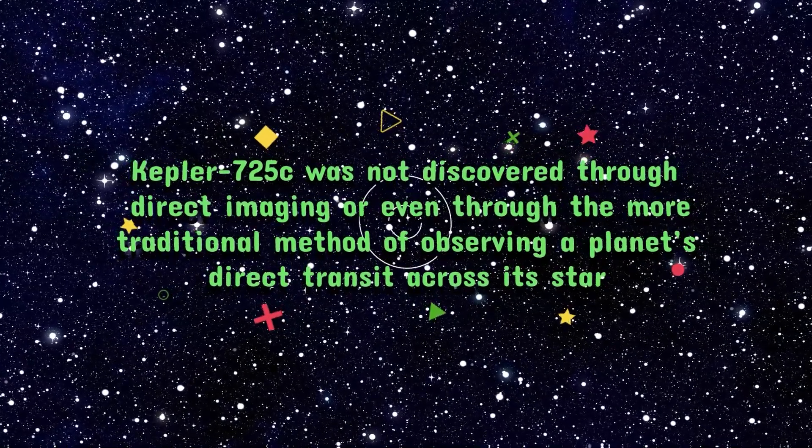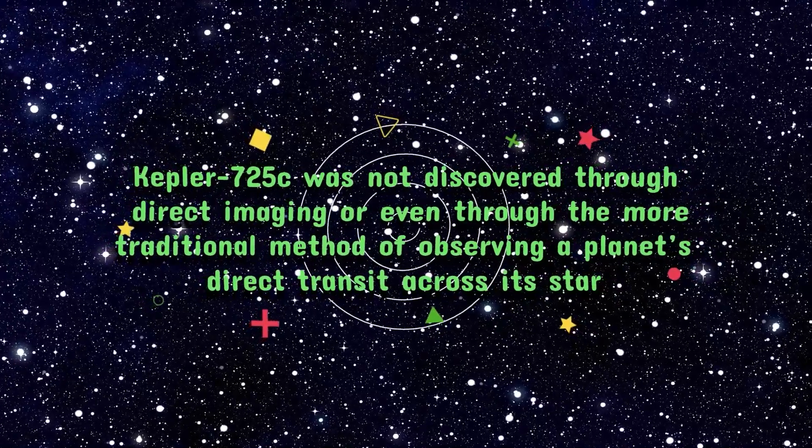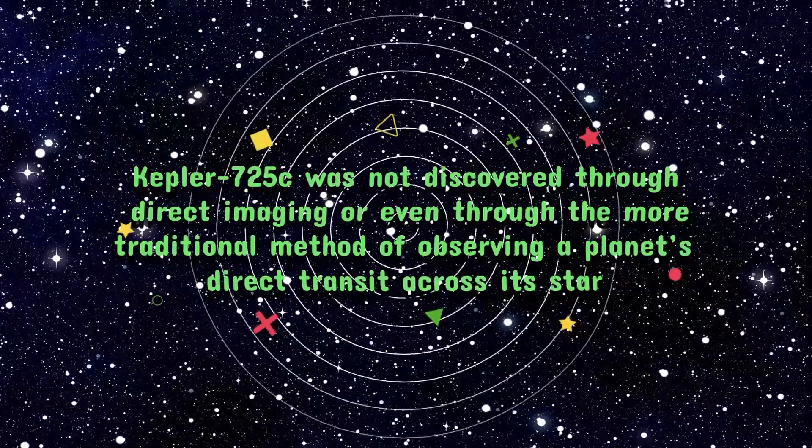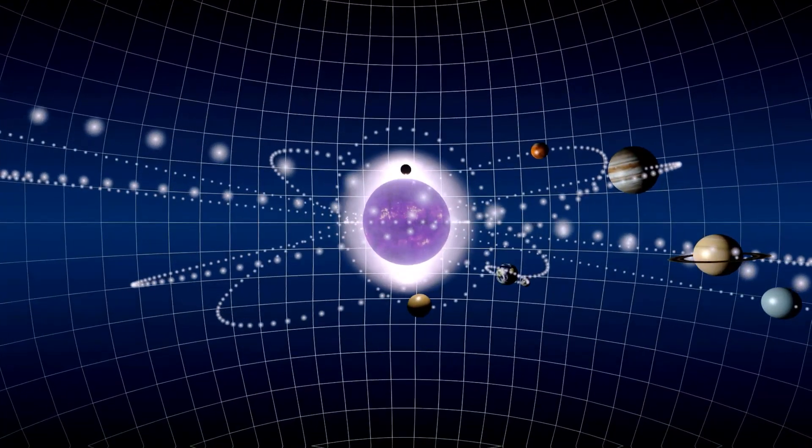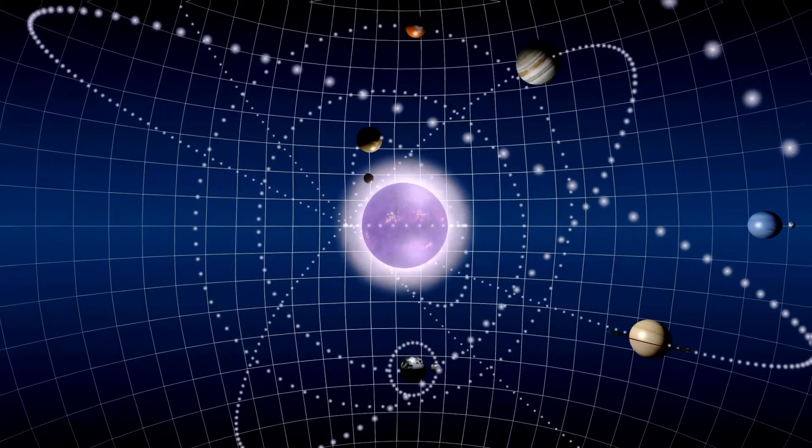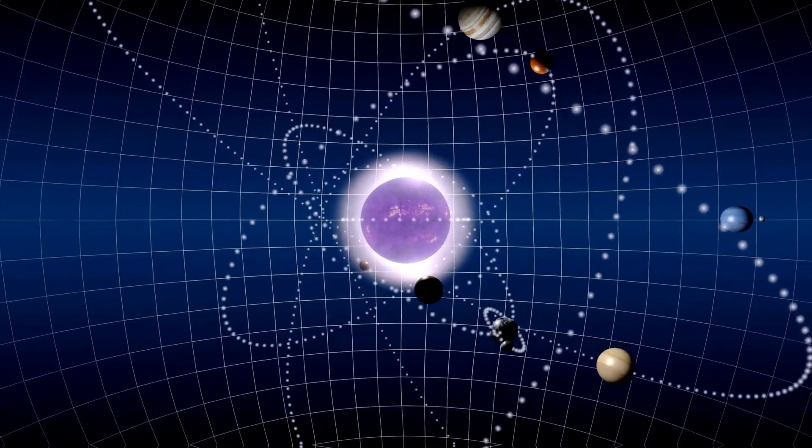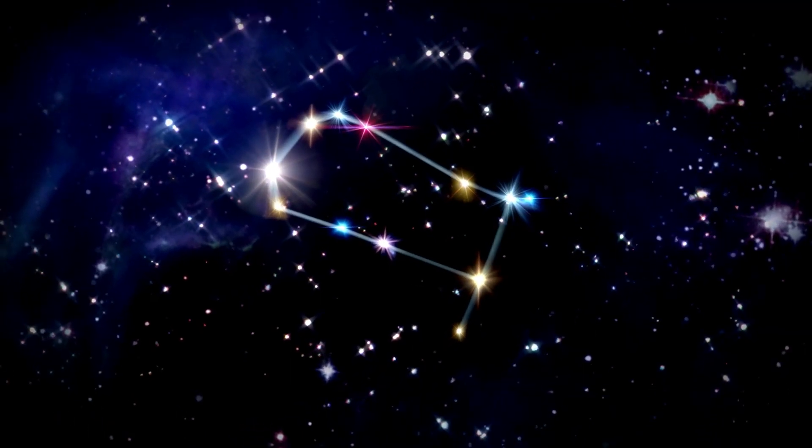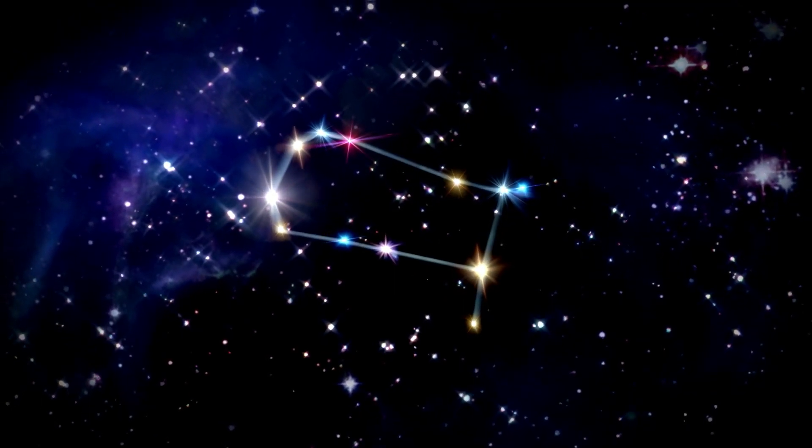Kepler-725c was not discovered through direct imaging or even through the more traditional method of observing a planet's direct transit across its star. Instead, astronomers use Transit Timing Variations, TTV, a technique that involves measuring slight deviations in the timing of a known planet's transits. These irregularities in timing can indicate the gravitational influence of an additional, unseen planet.